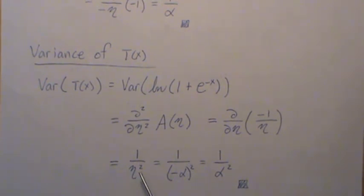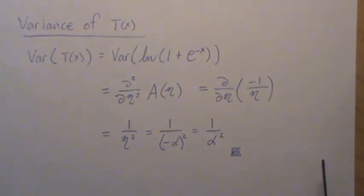Now we plug in what eta is, which is minus alpha. And you square it, you get just alpha squared back. Well, that's all I have for this video, and hopefully you enjoyed that.